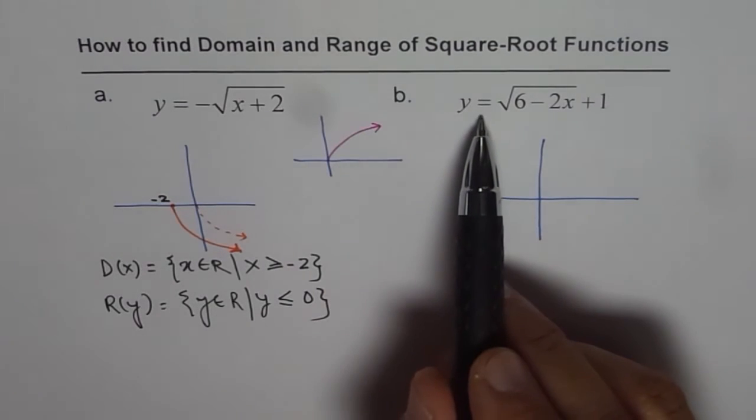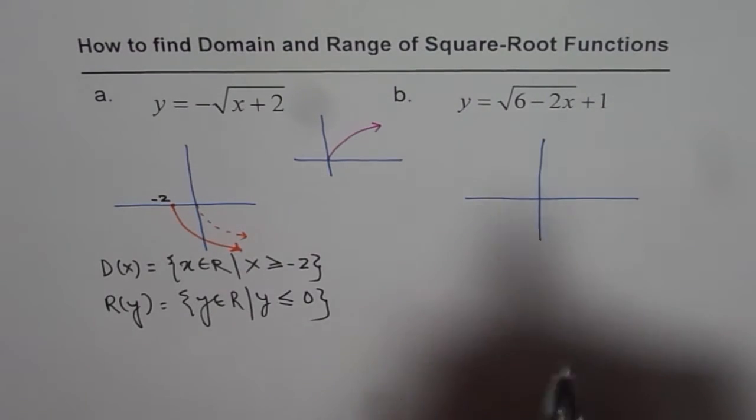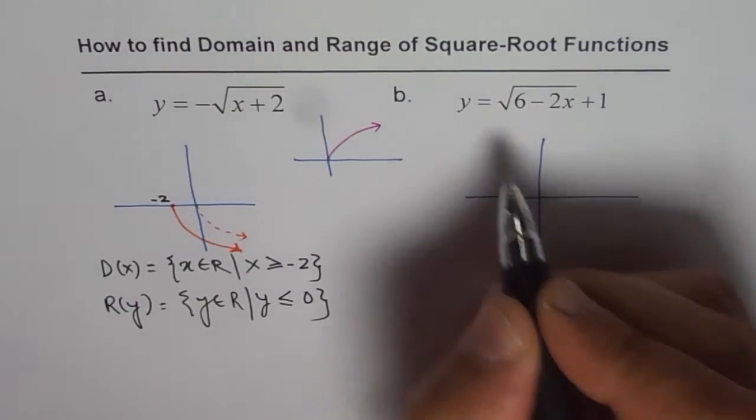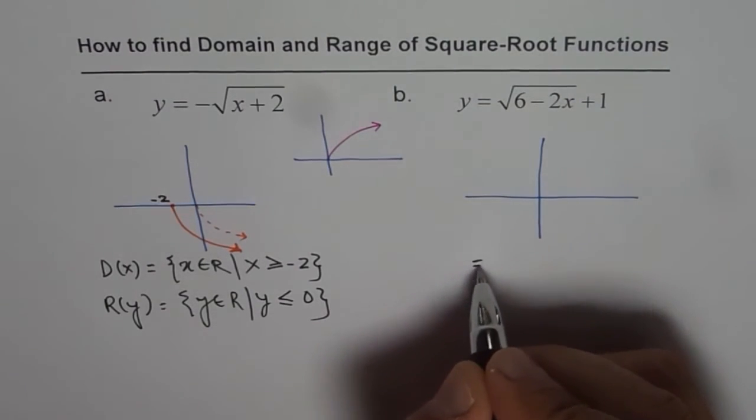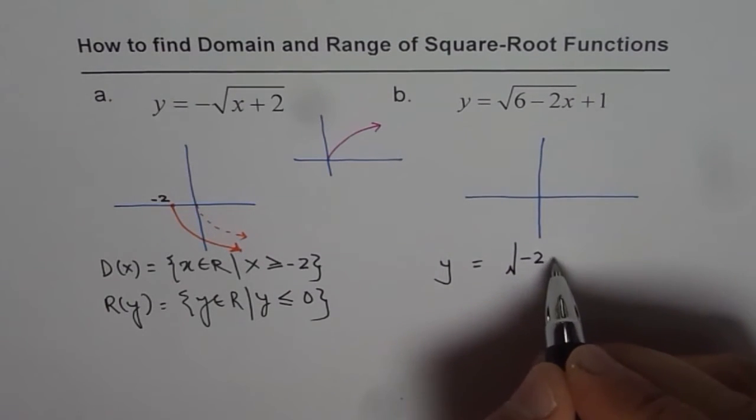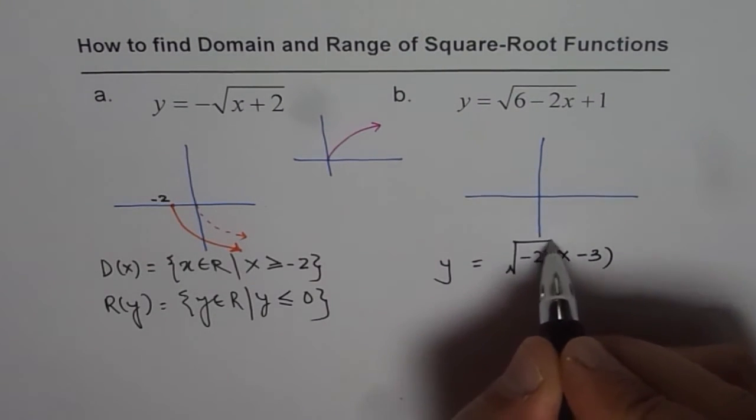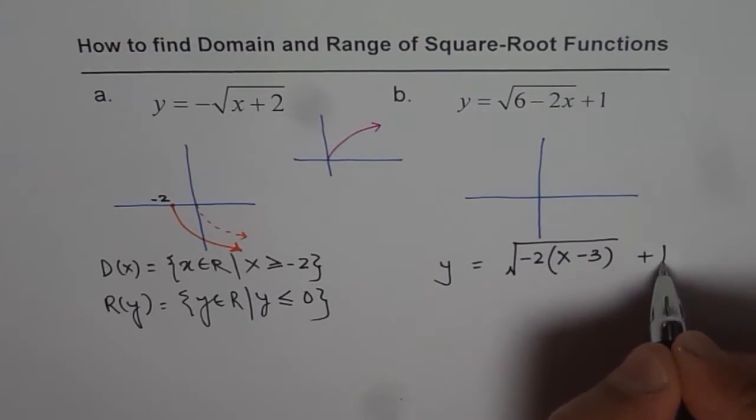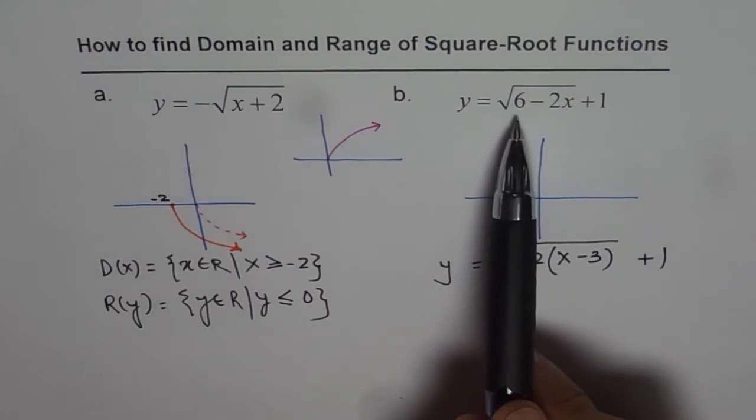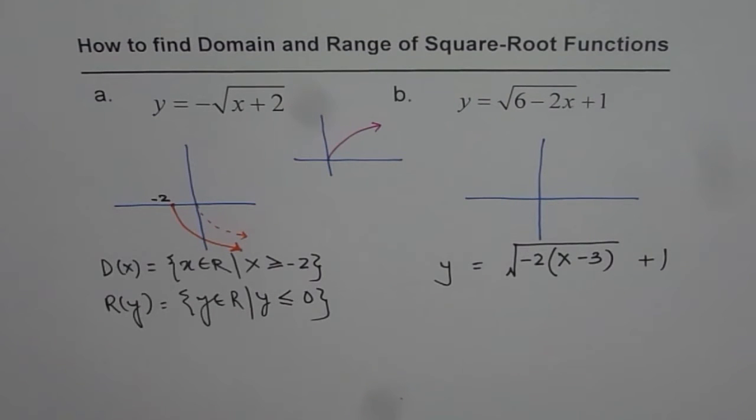Now let's look into this function y equals square root of 6 minus 2x plus 1. Now it's very important here to rewrite the function. So let me write down this function. We'll say y equals, now square root of, I will take minus 2, I'll factor minus 2. Then we are left with x and 6 divided by minus 2 is minus 3, and then plus 1. Earlier it seemed as if it is translating by 6 units horizontally, but truly it is just 3 units. So that is a very important thing to do before we get into translations.